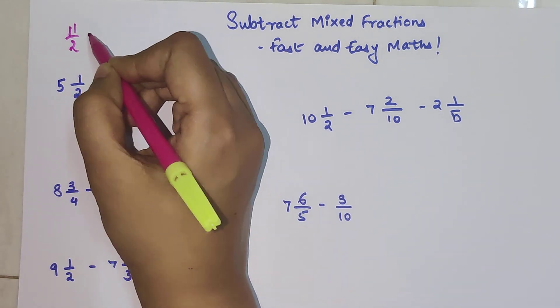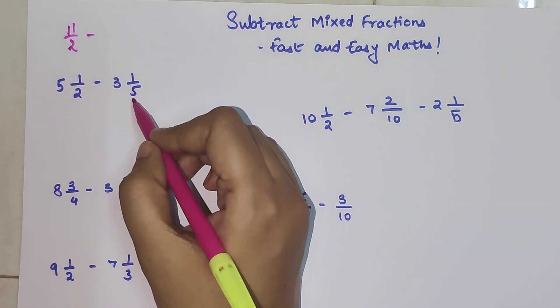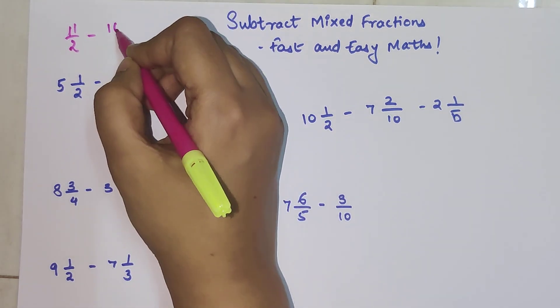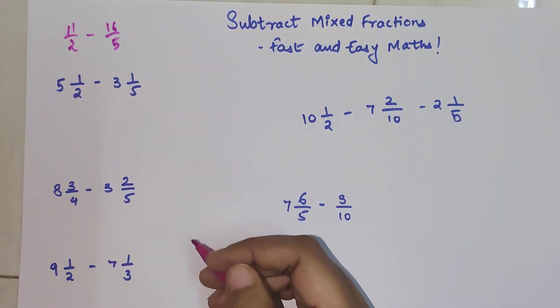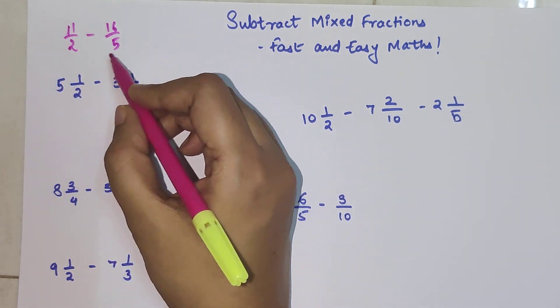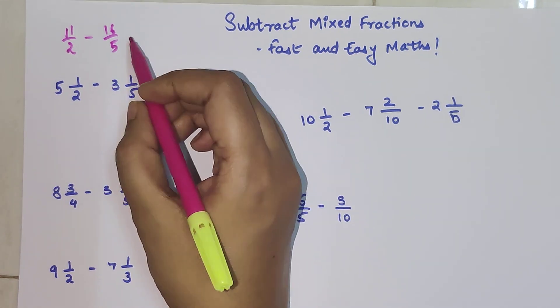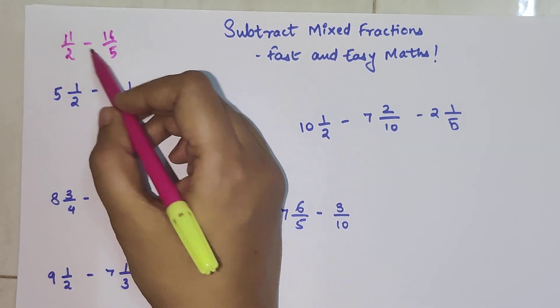So you get 11/2 minus 3 into 5 which is 15 plus 1, 16/5. Then what you have to do is LCM. In this case both are prime, so we can just directly cross multiply.